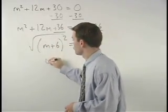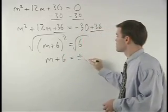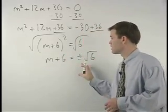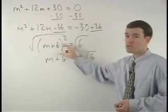And we have m plus 6 equals plus or minus root 6. Don't forget to use plus or minus when square rooting both sides of the equation.